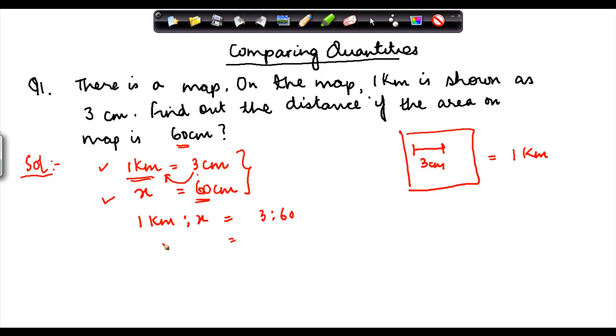Or we can simply write this as 1 divided by x is equal to 3 divided by 60, because that's what we mean by proportions, right? Now our idea is to find out this x. We need to find out what is the value of x in this proportion, because that is what is going to tell us what the area is which 60 cm represents.